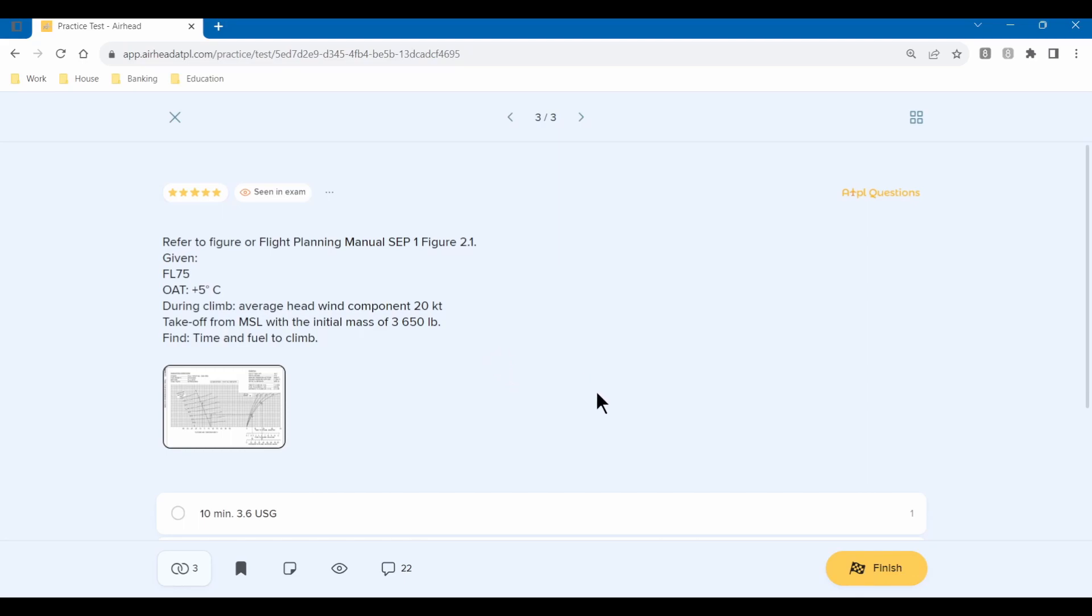So this is the question I'm going to use: flight level 75, outside air temperature is 5 degrees Celsius. During the climb, the average headwind component is 20 knots. It's takeoff from mean sea level with the initial mass of 3,650 pounds, and we need to find out the time and the fuel to climb.